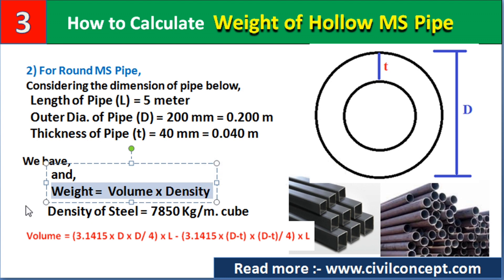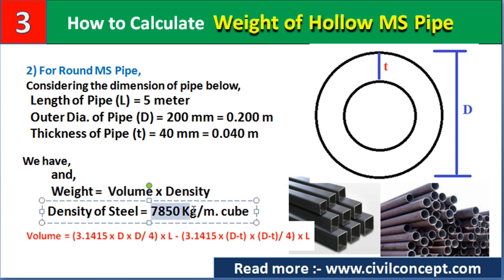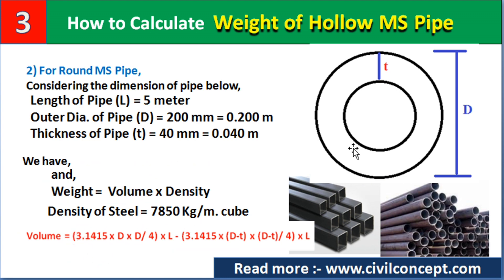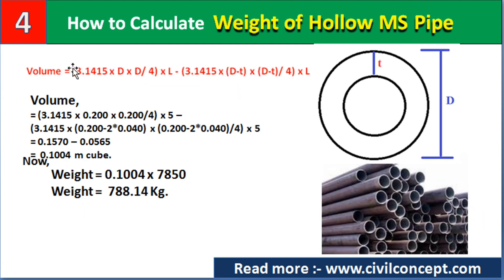Again, weight equals volume into density, with density = 7850 kg/m³. The formula for the volume of a round pipe is: π × D² / 4 × L − π × (D − T)² / 4 × L, where T is the thickness and D is the outer diameter.